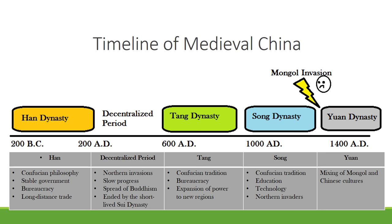This period was ended by the Sui Dynasty, which then fell apart, leading to the rise of the Tang Dynasty. Today we're focusing on the Tang and Song Dynasties, both of which rely on Confucian philosophy and use a system of bureaucracy. The Song Dynasty is eventually brought down when the Mongols invade in 1276, after which we see the rise of the Yuan Dynasty.